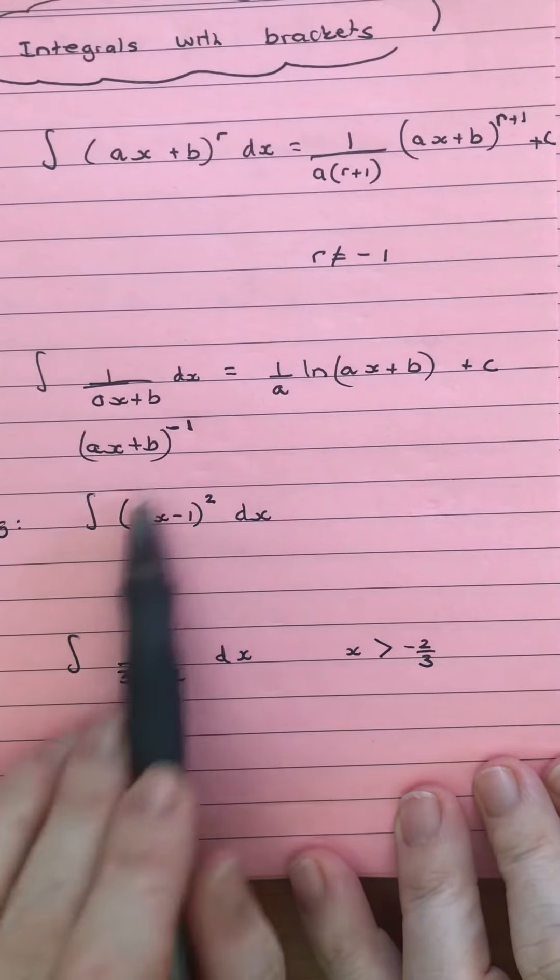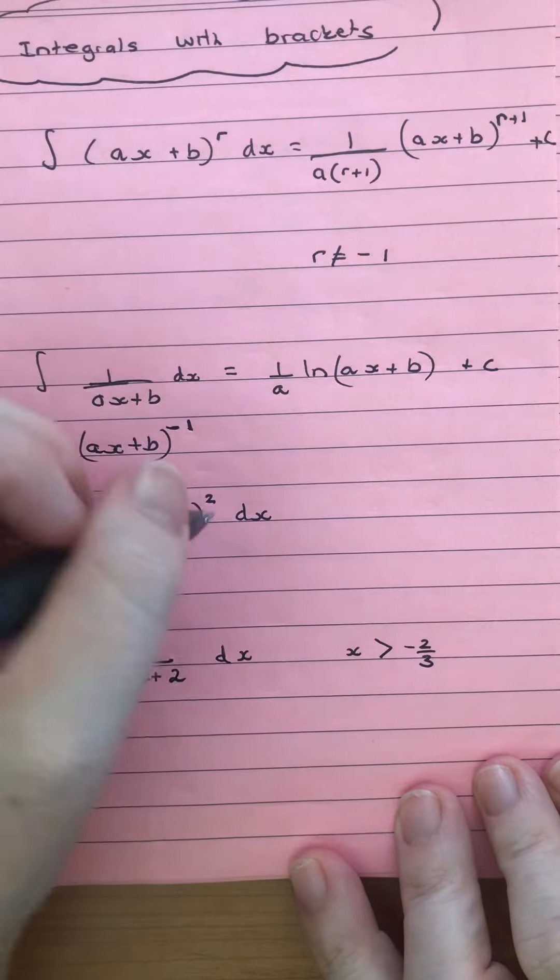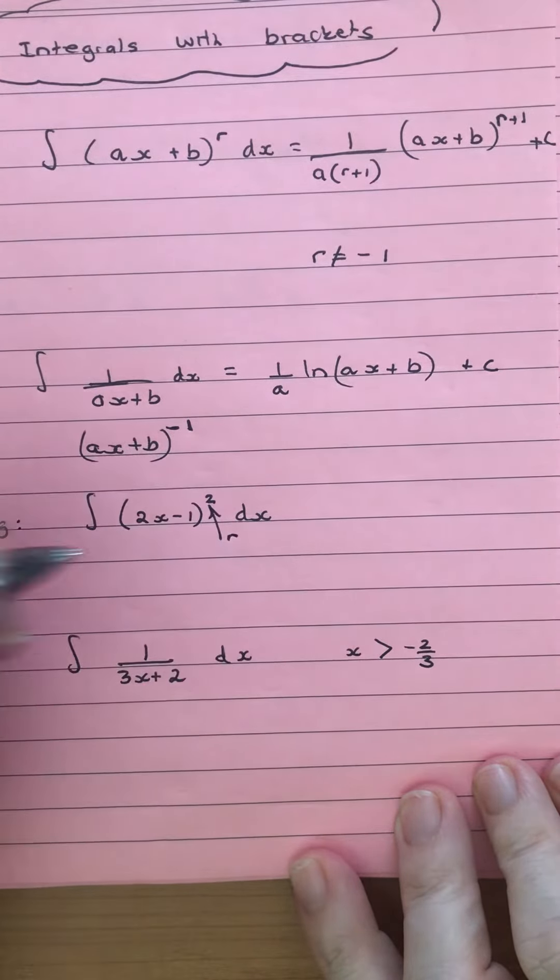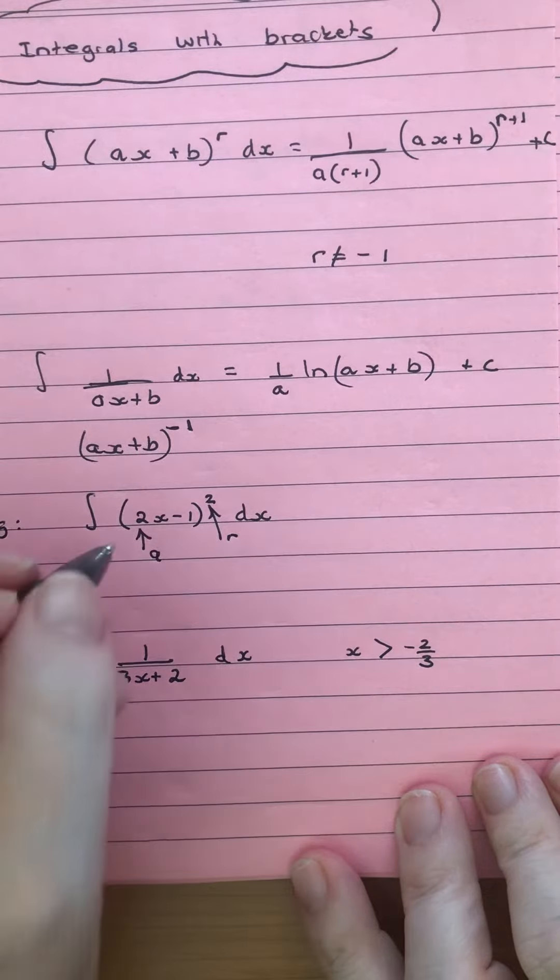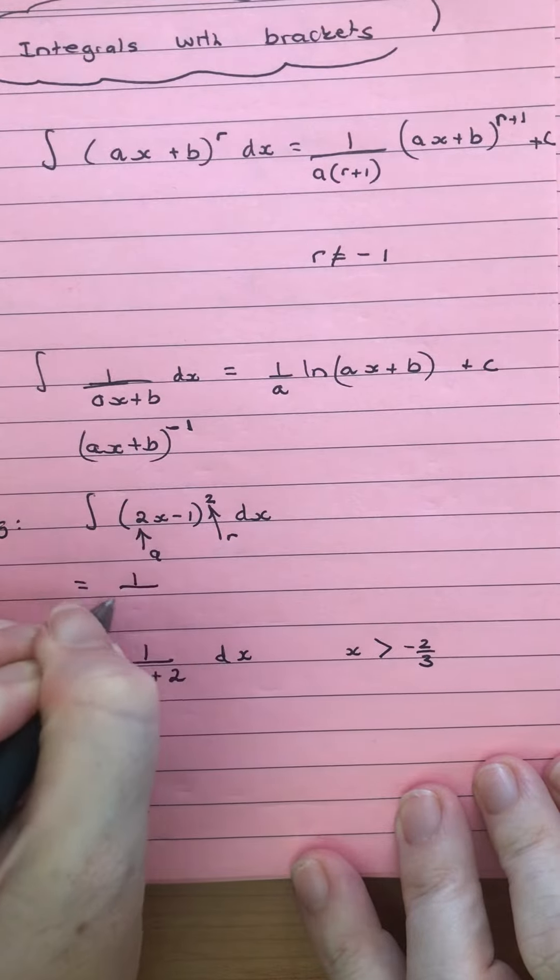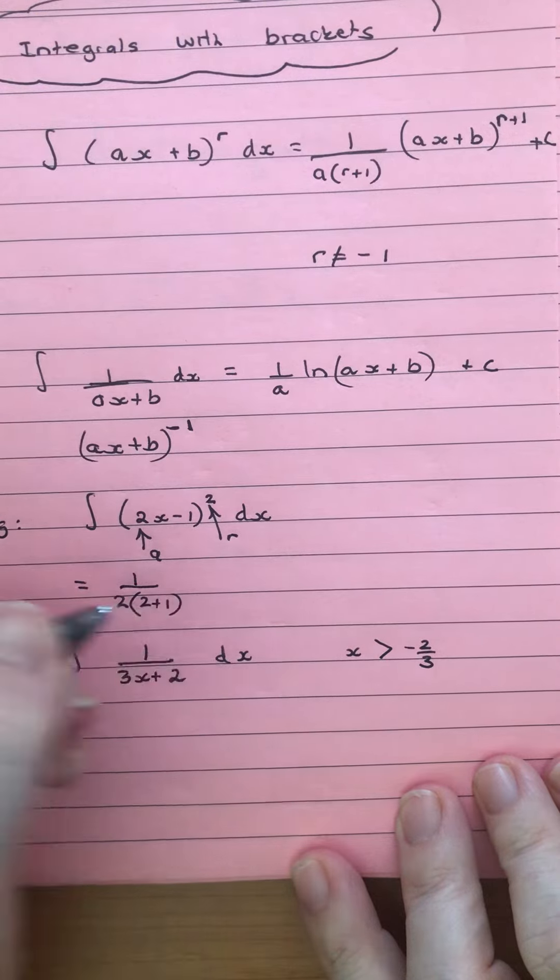So we've got an example here: (2x-1) squared. So the 2 is our r, and 2 is also our a there as well. So we're going to have 1 over 2 outside of 2 plus 1.